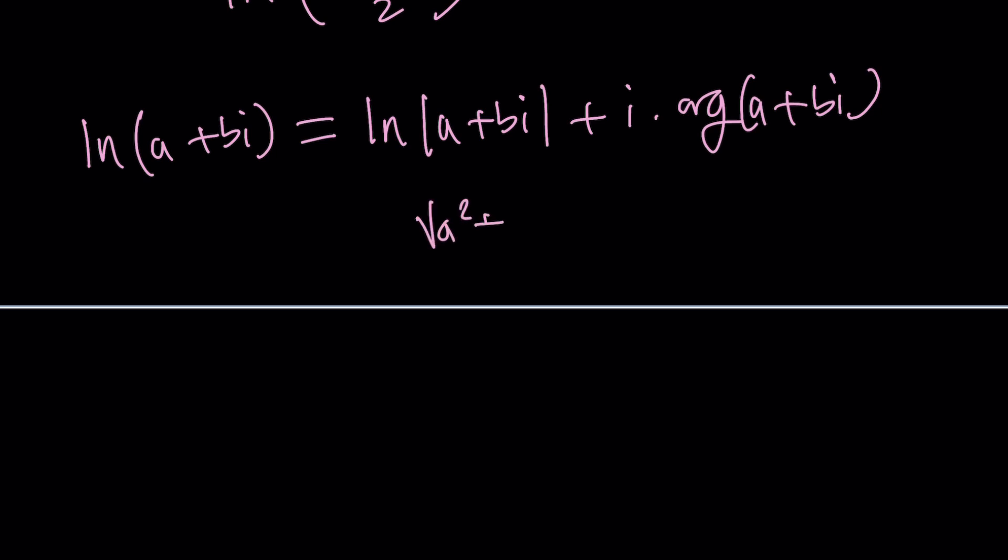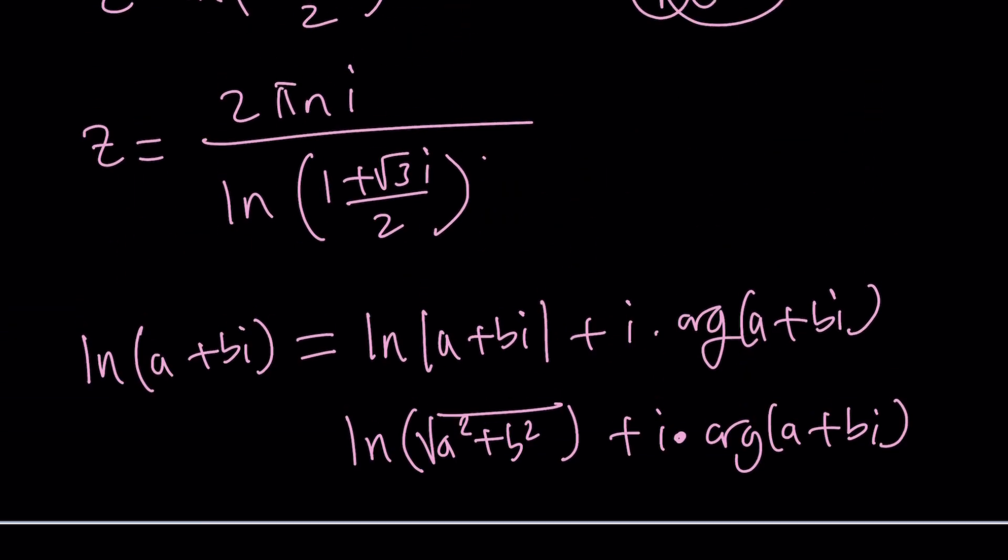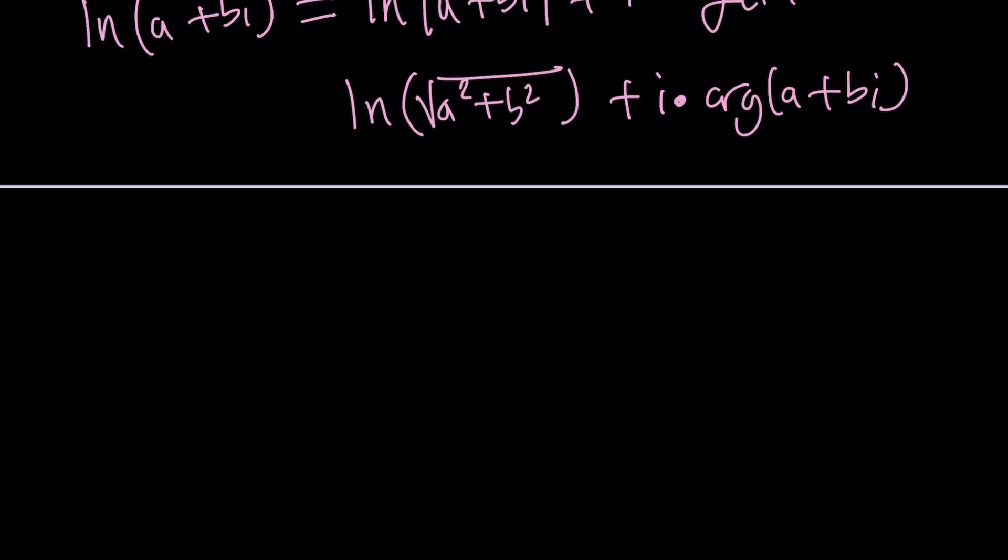An argument can be expressed in terms of arc tangent but it really depends on the quadrant where a plus bi is so I'm just going to write it like that. So we do need the absolute value and the angle but that's very easy to do for this number because if you think about it this is one half plus root 3 over 2i and in the complex plane it kind of looks like this sort of and the angle it makes is 60 degrees or pi over 3 radians and its modulus is 1. Okay you got that right from Pythagorean theorem.